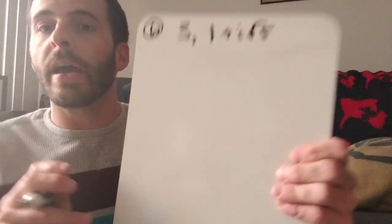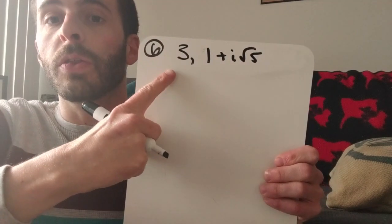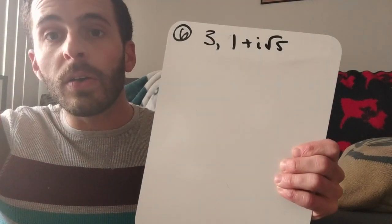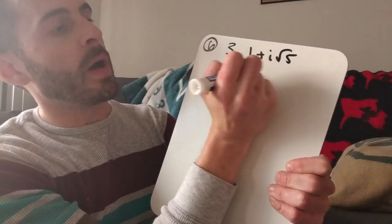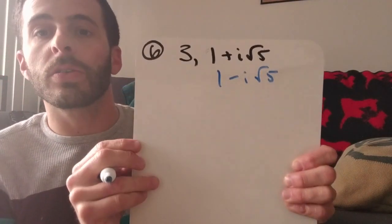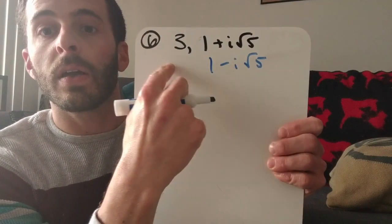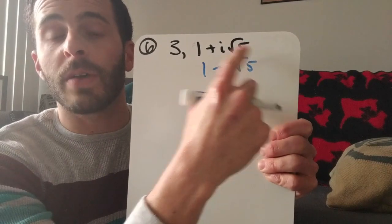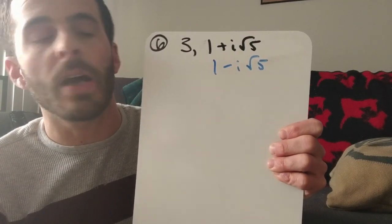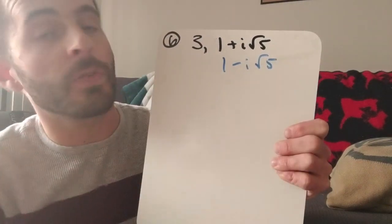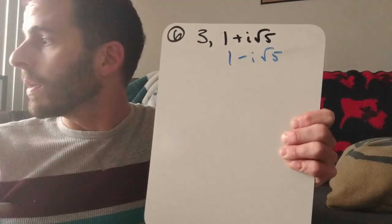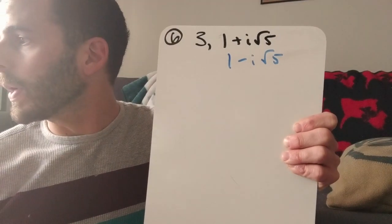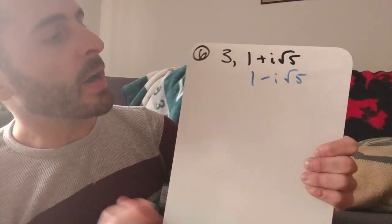For number 6, they tell us to build a polynomial, and we know that the roots are 3 and 1 plus i√5. So now I know that 1 minus i√5 is also going to be a root. 3 has no radical and no i, so there's no conjugate. But 1 plus i√5 has both a radical and an i, so its conjugate, 1 minus i√5, is going to be a solution as well.